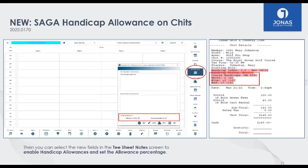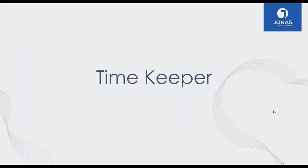The particular new addition here is the ability to add a handicap allowance on your tee sheet for tournaments. If you only allow 80 percent of a member's handicap, that can print on member receipts. For example, white tees show a two handicap, blue tees a plus two, and red tees a plus six.